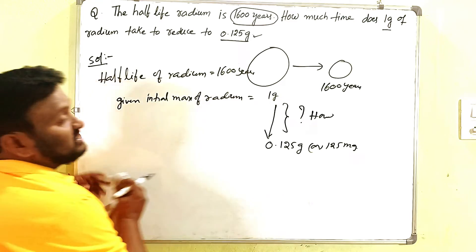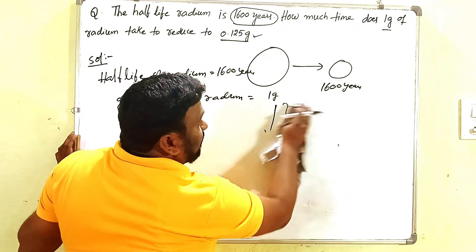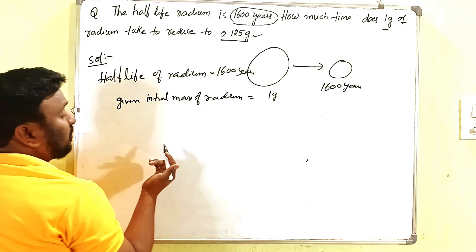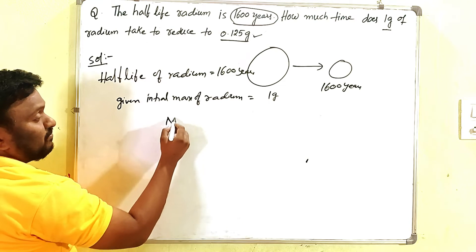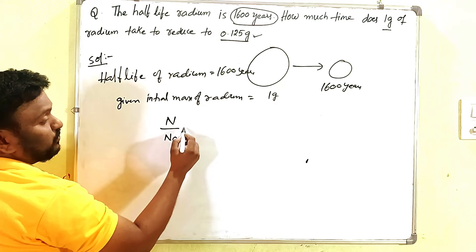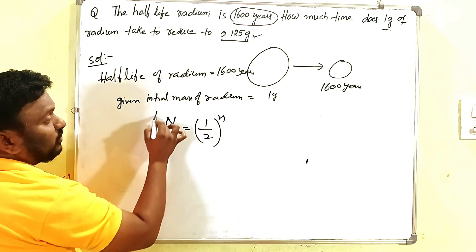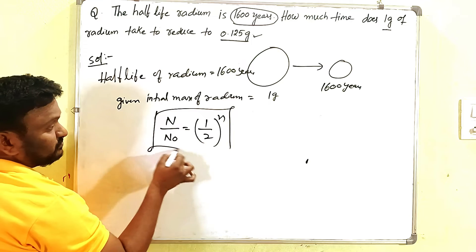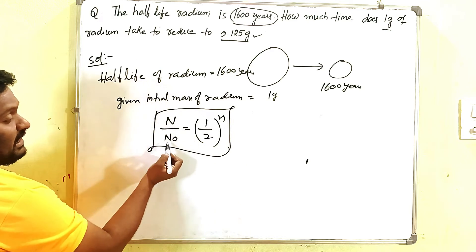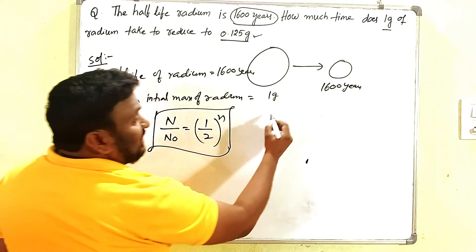For that, how much time will it take? That is what we have to calculate. How much time taken for radium to decrease from one gram to 0.125 grams or 125 milligrams? That is the concept here. So for that, we have one formula. That is very important here. The formula should be like this: N by N₀ equals 1 by 2 to the power n. This is the formula we are going to use.